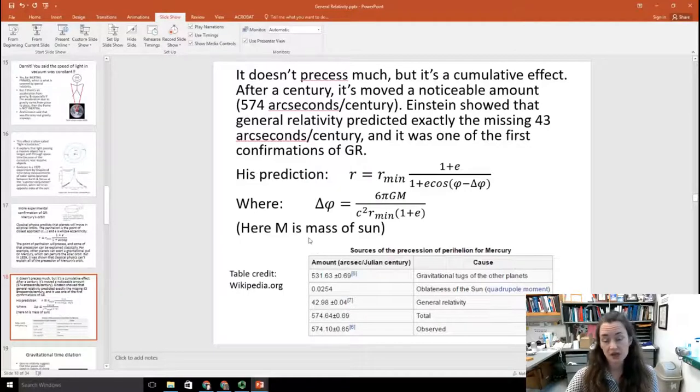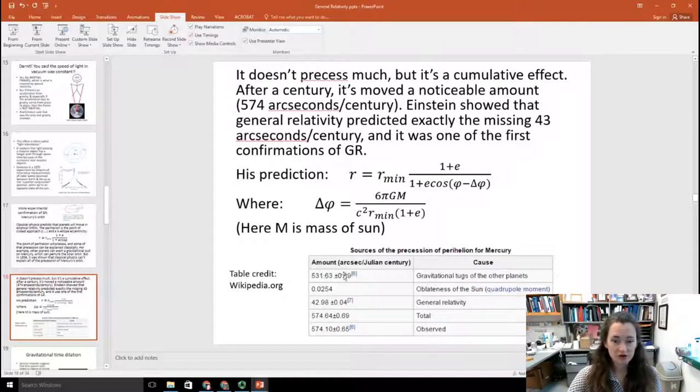So his prediction from general relativity said that you would just add on this little delta phi here in the equation. And then that delta phi he predicted as being equal to 6 pi G m divided by c squared r min times 1 plus e. Now, of course, here m is the mass of our Sun. And when he solved for it, he got the 43 arc seconds that was missing. And you can see that almost 532 arc seconds would be gravitational tugs of the other planets. So most of it could be explained classically. However, general relativity does predict a substantial chunk, a little less than 10% or so, of the precession of the orbit of Mercury.